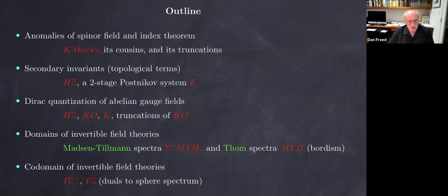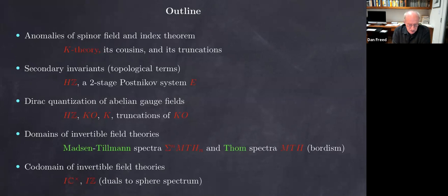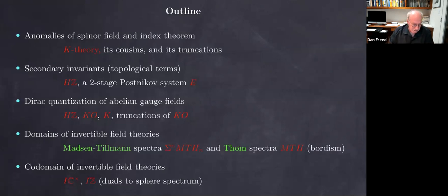Another place where it enters is in the direct quantization of abelian gauge fields. Again, the examples will be from string theory — one encounters theories beyond cohomology. The last two topics are really about invertible field theories, and understanding invertible field theories themselves as a map between spectra. There's a story for the domain, a story for the codomain, and both of those involve different sorts of generalized cohomology theories or spectra.